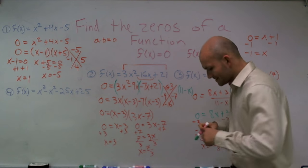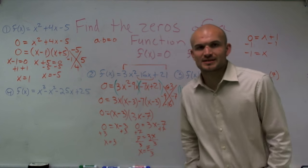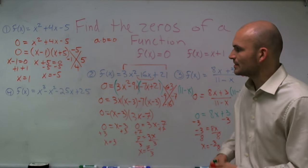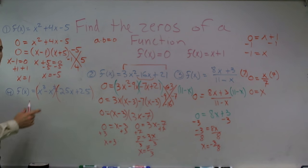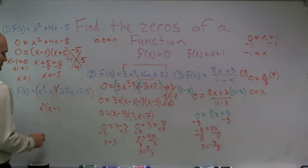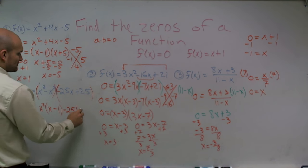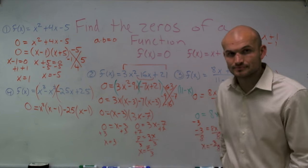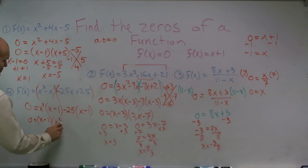One more to go, and this is my favorite because nobody likes factoring by grouping. When you have four terms, just group the first two and the last two. From the first two terms, I can factor out x squared, leaving x minus 1. From the last two terms, I factor out negative 25, also leaving x minus 1. Remember, this all equals 0 because f of x equals 0. Now I factor out x minus 1, giving 0 equals x minus 1 times x squared minus 25.